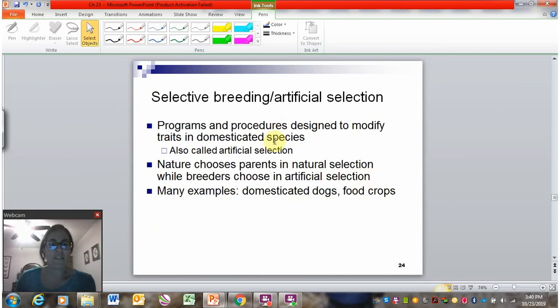Another way that we can see change over time in living things is by a human-manipulated situation. This is called selective breeding or also artificial selection. So this is where humans have modified the traits of living things in domesticated organisms. So this is like cows, horses, all of our crop plants, dogs, right?